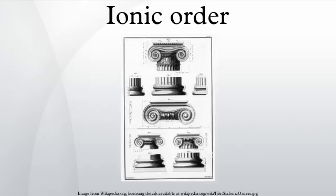Originally the volutes lay in a single plane. Then it was seen that they could be angled out on the corners. This feature of the Ionic order made it more pliant and satisfactory than the Doric to critical eyes in the 4th century BC. Angling the volutes on the corner columns ensured that they read equally when seen from either front or side façade.